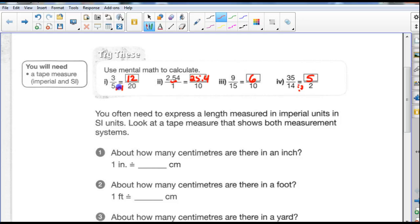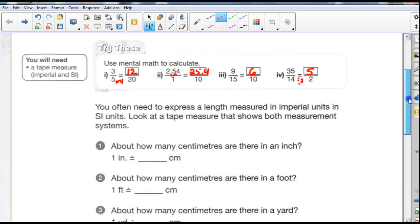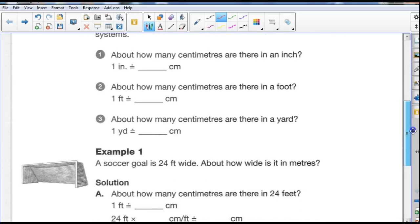You often need to express a length measured in imperial units and SI units or in metric units. Let's look at a tape measure that shows both measurement systems. About how many centimeters are there in an inch? One inch is about two and a half centimeters. Number 2, about how many centimeters are there in a foot? One foot is about 30 centimeters.